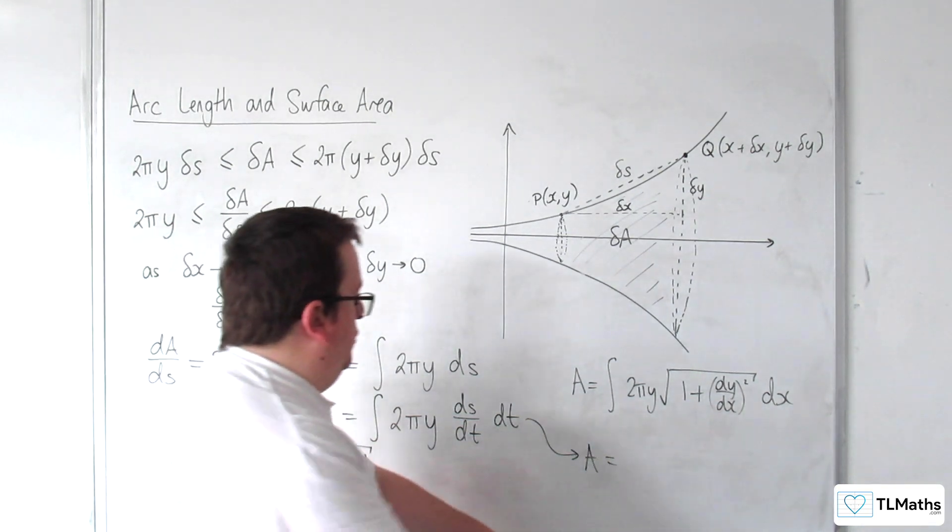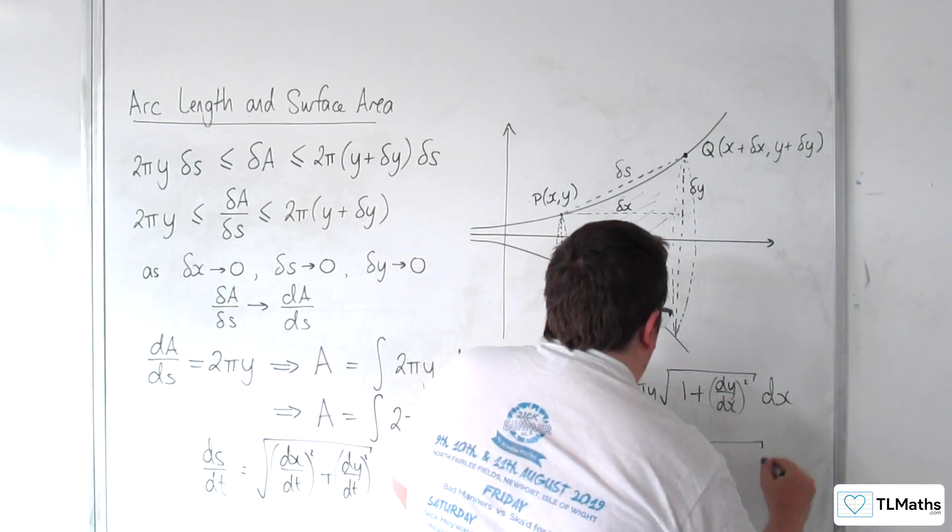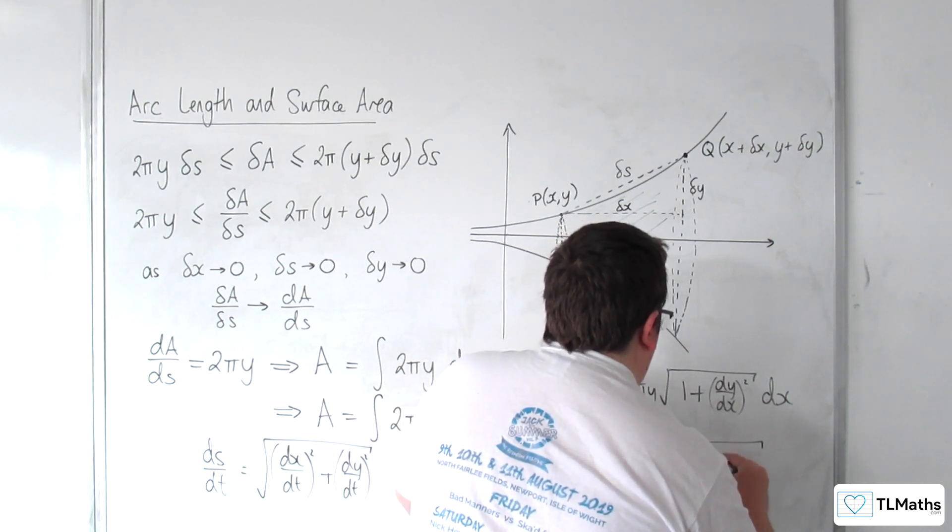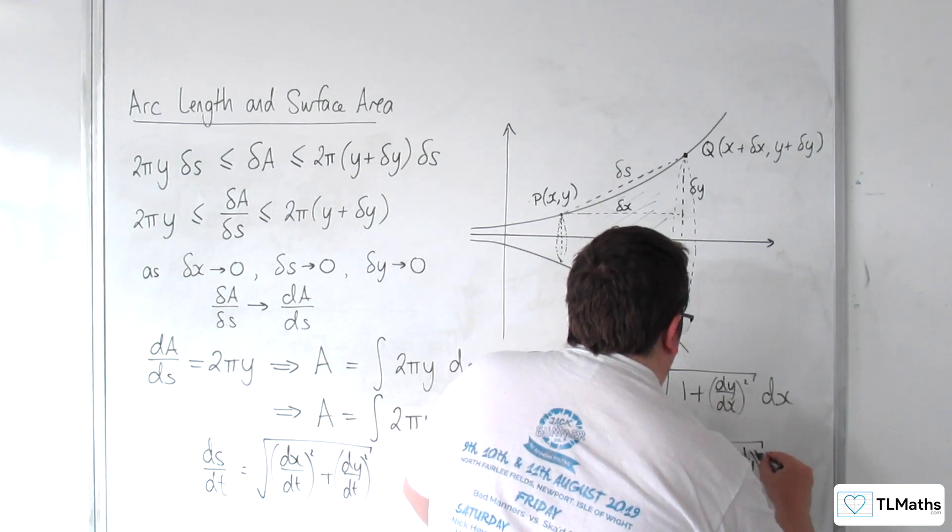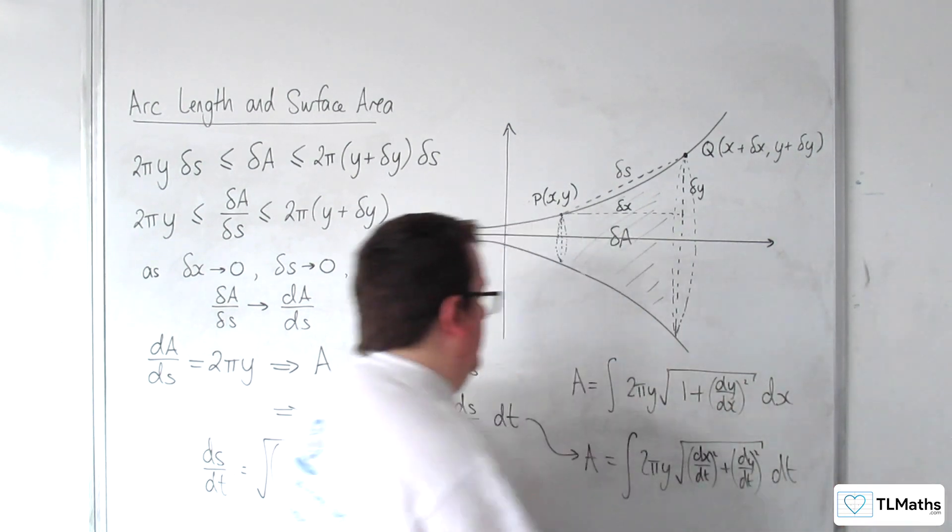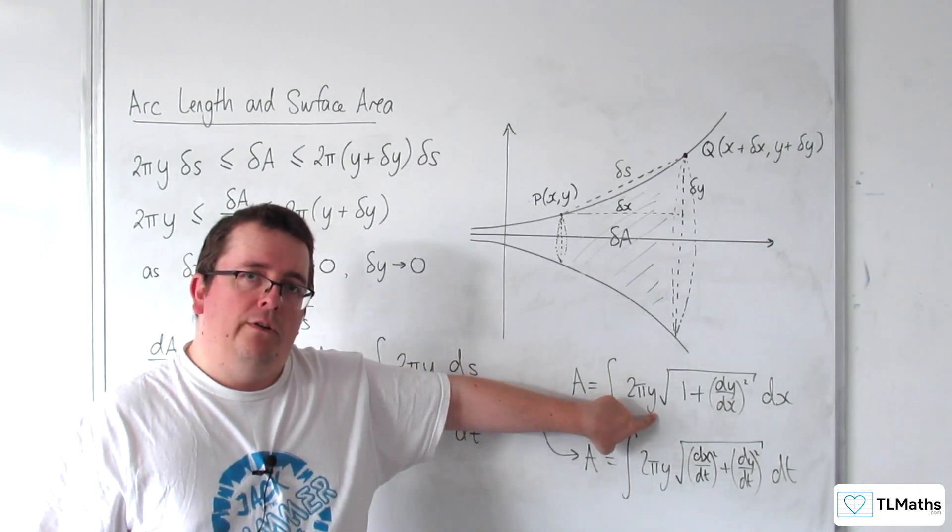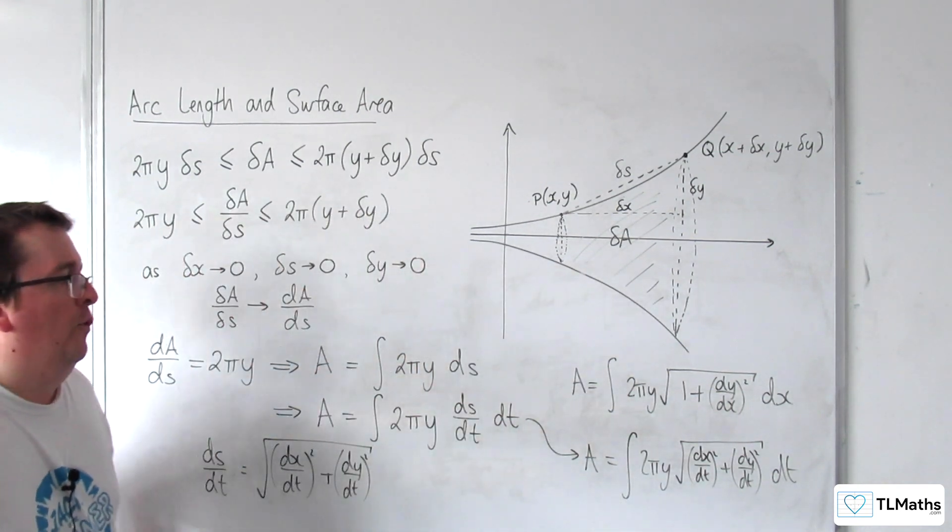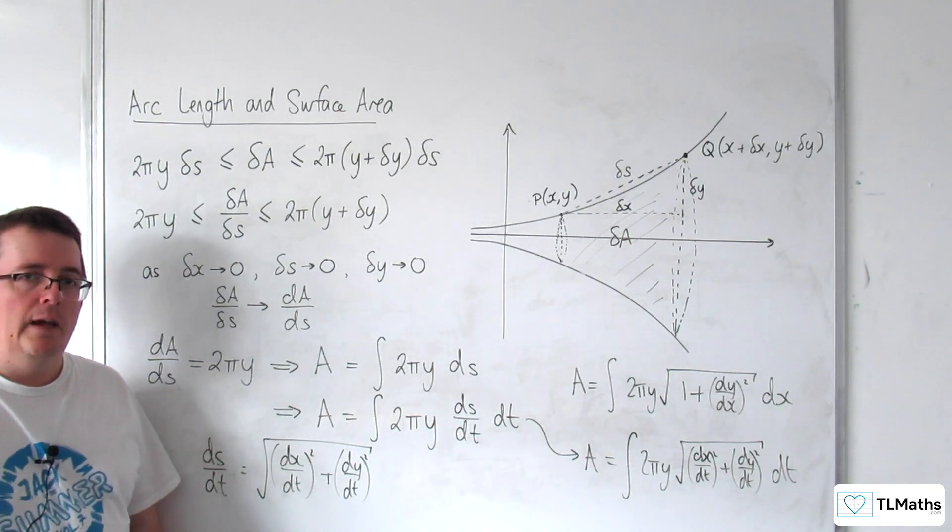So I could write the area as the integral of 2πy times the square root of (dx/dt)² plus (dy/dt)² dt. So we've got the Cartesian form for the surface area of the curve, and we've got the parametric form for the surface area of the curve. That's where the formulae come from.